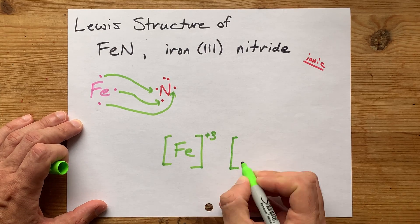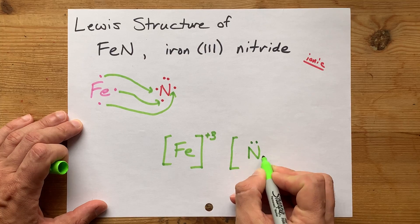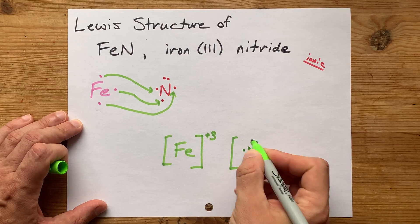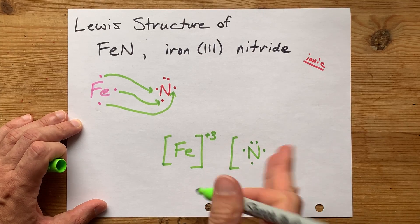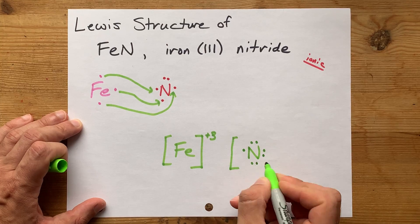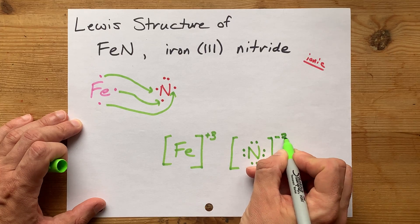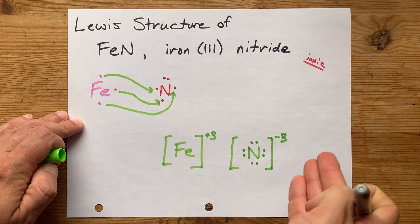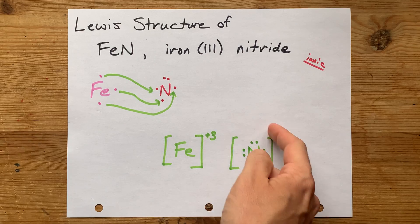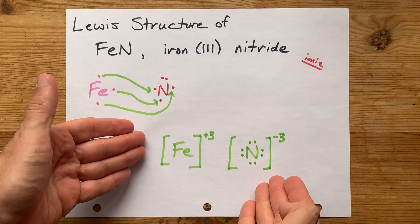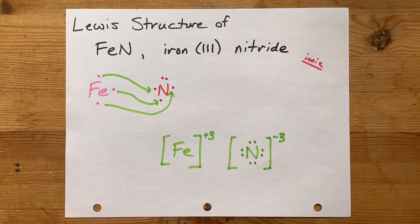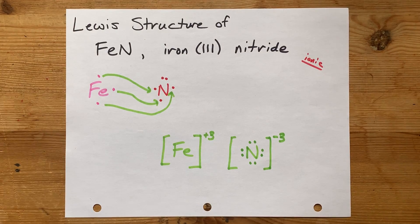And the nitrogen is going to have its 1, 2, 3, 4, 5 valence electrons that it started with, plus the 1, 2, 3 that it got from iron. You're going to give it a charge of minus 3 because it has 3 extra negative charges. This here is the complete Lewis structure for iron III nitride. Thanks for being with me, and best of luck.